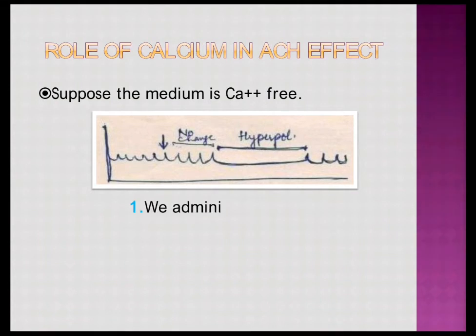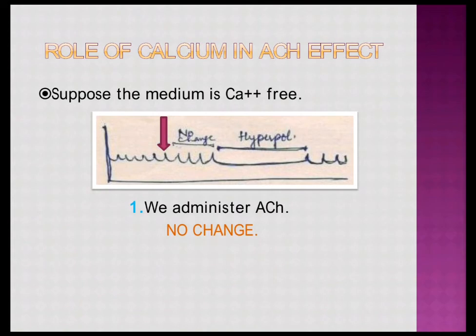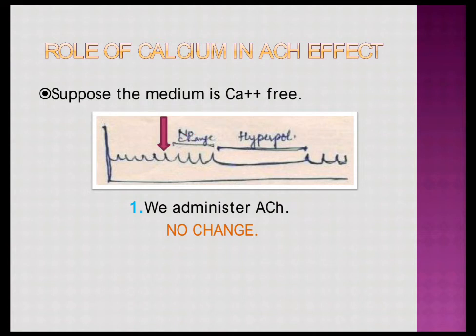In a calcium-free medium, when we administer ACh, what happens is there is no change at all. So if you have a calcium-free medium with no calcium ions and administer ACh, there is no change in the graph of the heartbeat. This means the ACh effect is also somewhat dependent on calcium ions.